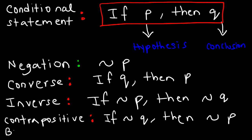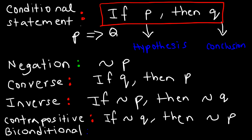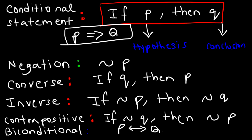We also talked about the biconditional statement. A biconditional statement occurs when the conditional statement and the converse have the same truth value. So if the conditional statement is true and the converse is true, then you have a biconditional statement. In a biconditional statement, it can go both ways: if P, then Q, or if Q, then P. Both will be true, or both will be false.